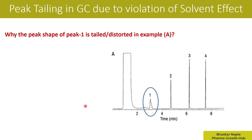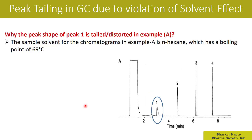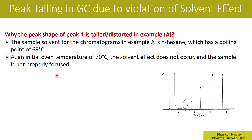Let us go back to our original question: why is the peak shape of peak number one tailed or distorted in example A? Focus on peak number one — it is quite distorted with a lot of peak tailing. The sample solvent for example A is N-hexane, which has a boiling point of 69 degrees Celsius. The big flat peak is the solvent peak, belonging to N-hexane. The initial column temperature in example A is 70 degrees Celsius, and at this temperature the solvent effect does not occur, so the sample is not properly focused.